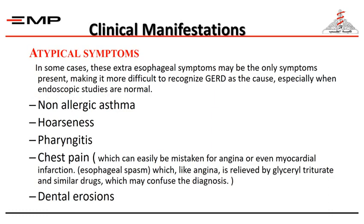Atypical or extraesophageal symptoms can sometimes be the only symptoms present for the patient, making it more difficult to diagnose GERD as the cause, especially when endoscopic studies are normal. The patient could present with non-allergic asthma, hoarseness of voice, pharyngitis, chest pain somewhat typical of angina — due to esophageal spasm — and it is very important to exclude any heart problem by doing ECG and echo. Dental erosions are sometimes the presenting symptom.